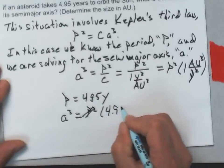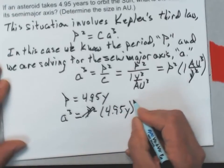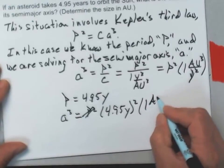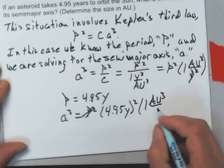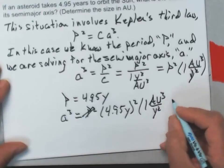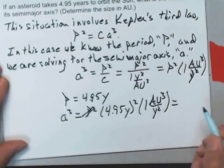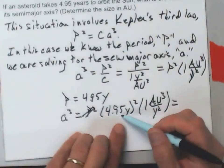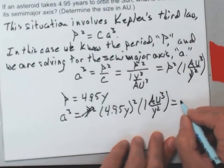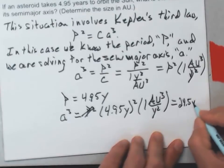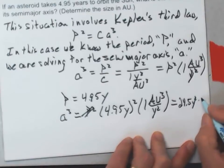4.95 years squared times 1 AU cubed per year squared will equal, I squared 4.95 on my calculator and got 24.5 years squared.